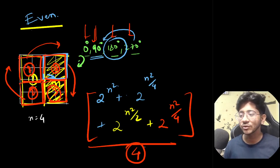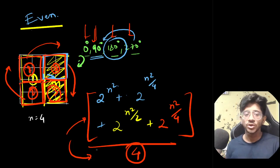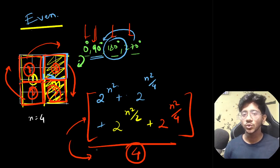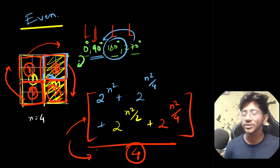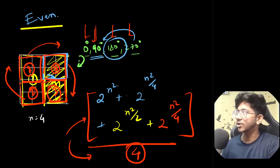A useful check in Burnside Lemma: the numerator must always be divisible by the denominator, since the count of distinct colorings must be a whole number. So if you derive a formula and are unsure, plug in small values like n=1,2,3,4 into the formula and verify divisibility. If it's not divisible, you've made a mistake. This is a neat sanity-check for these types of problems.